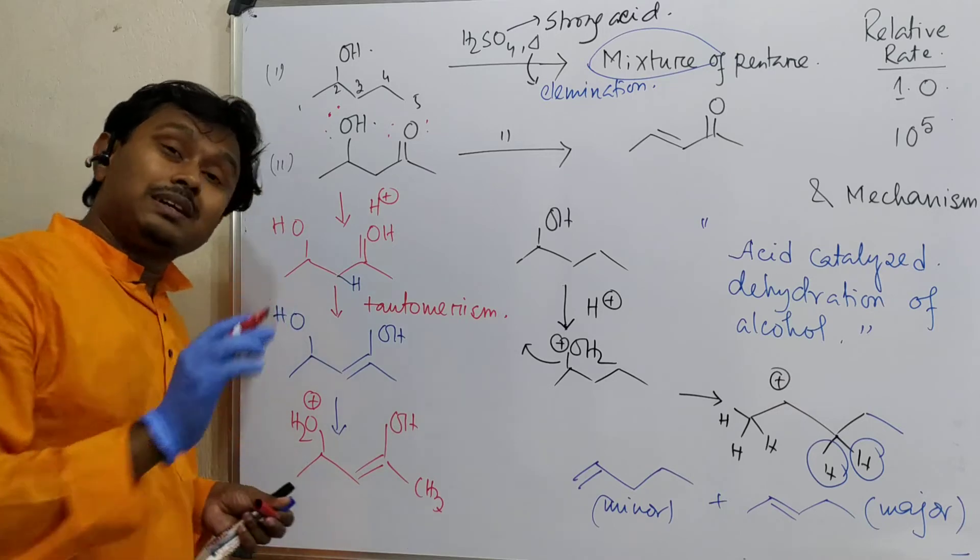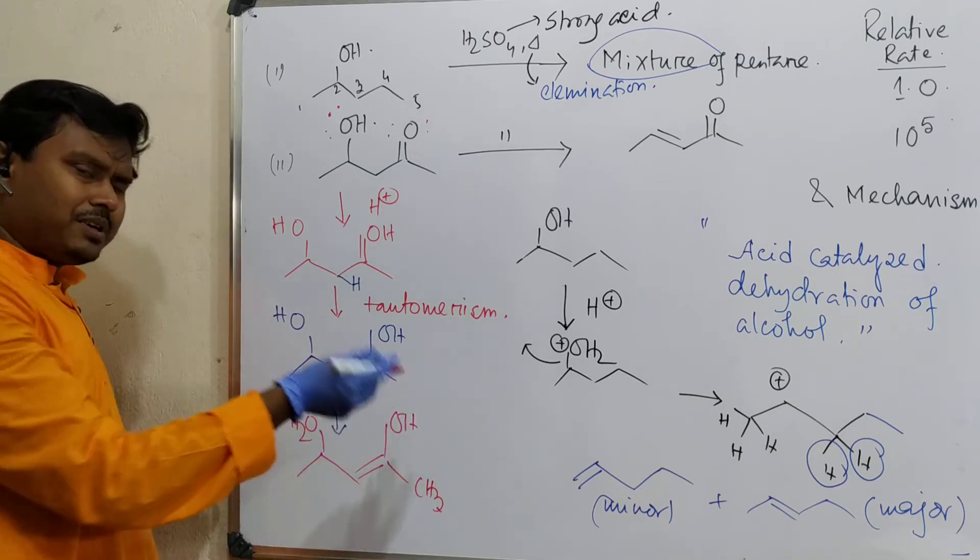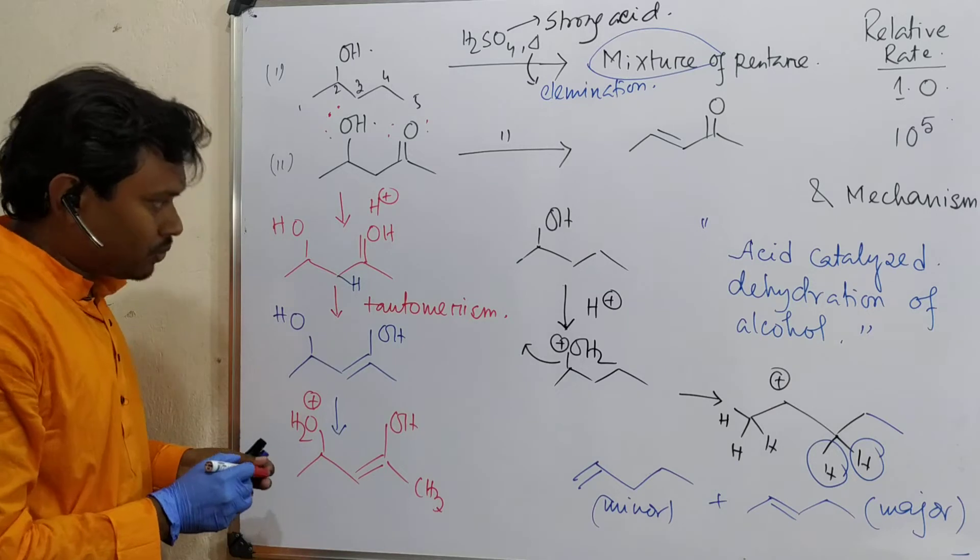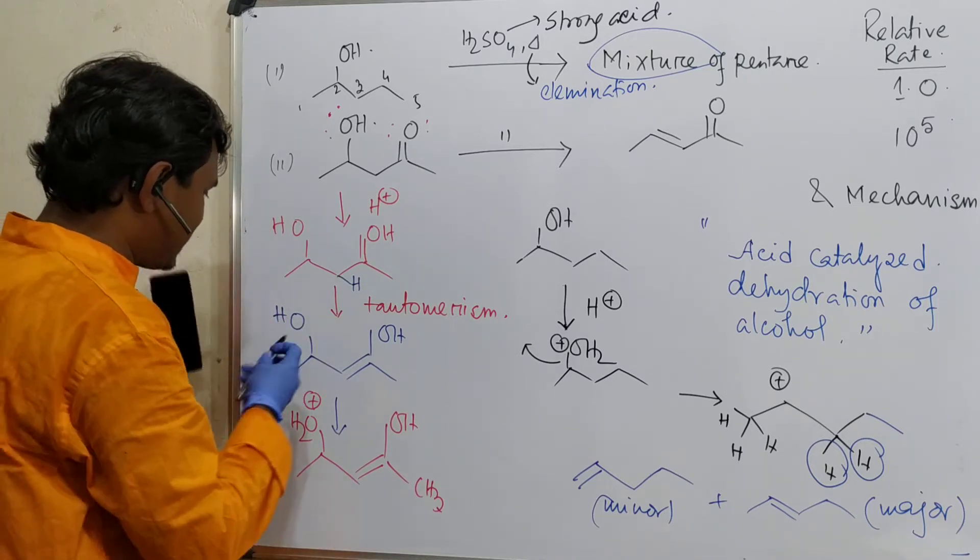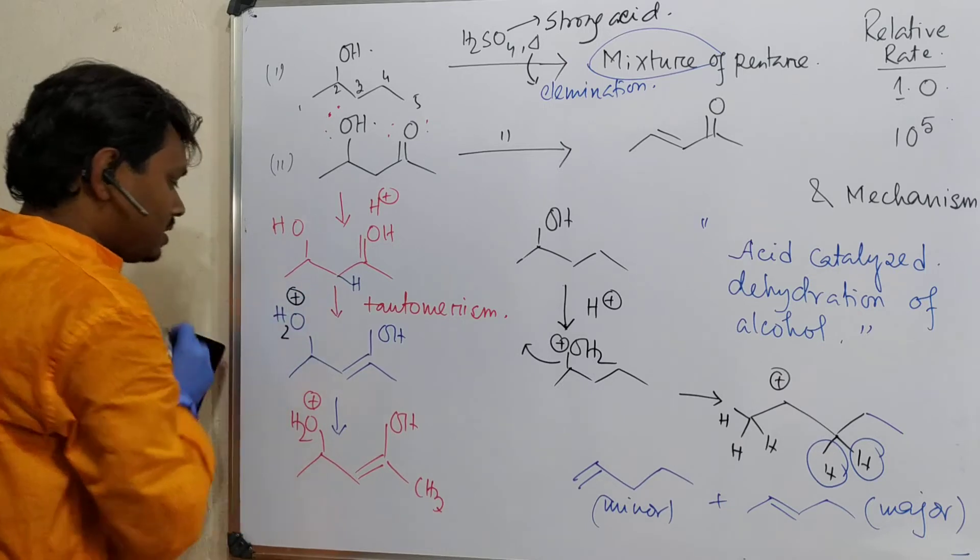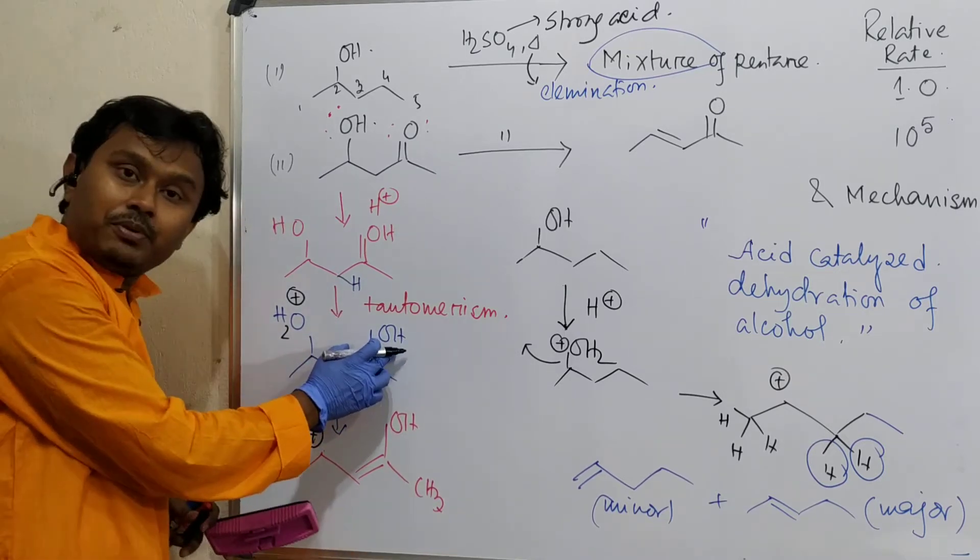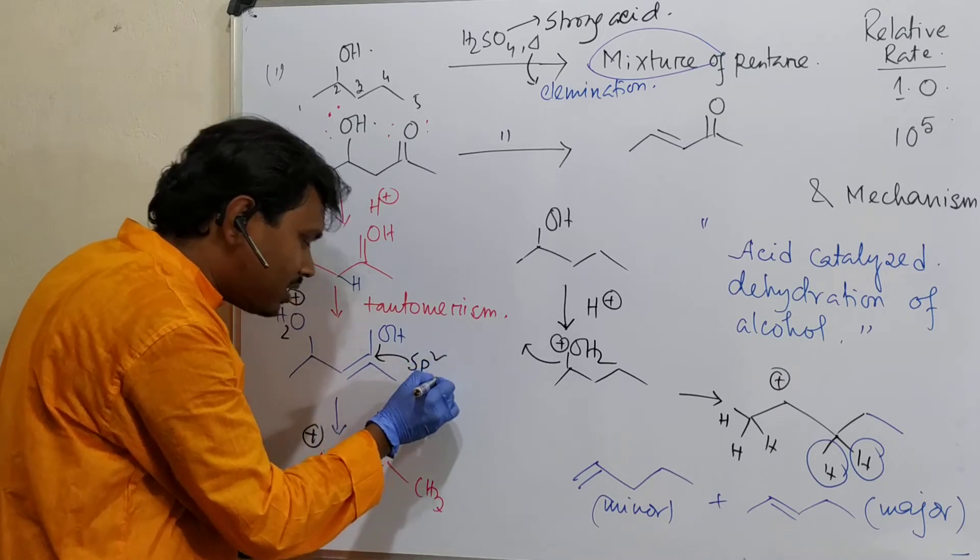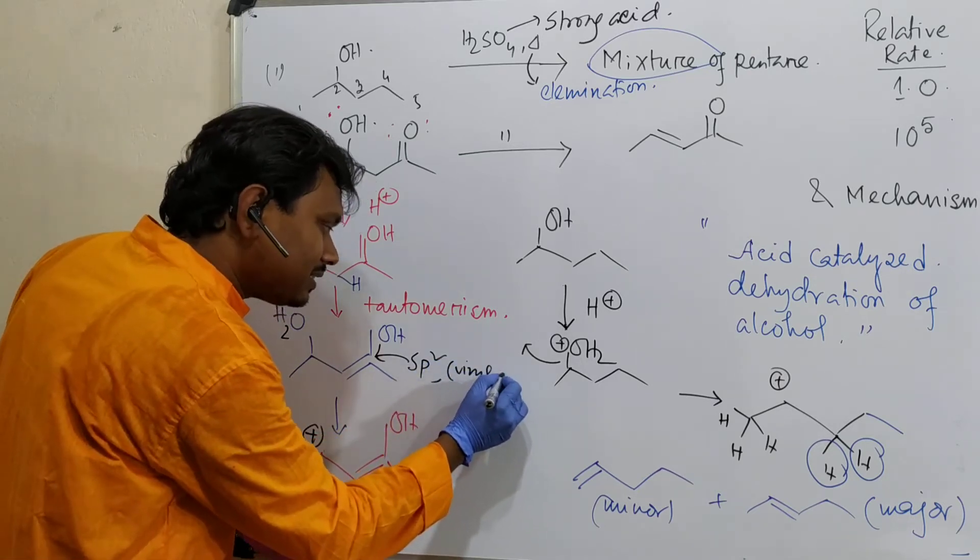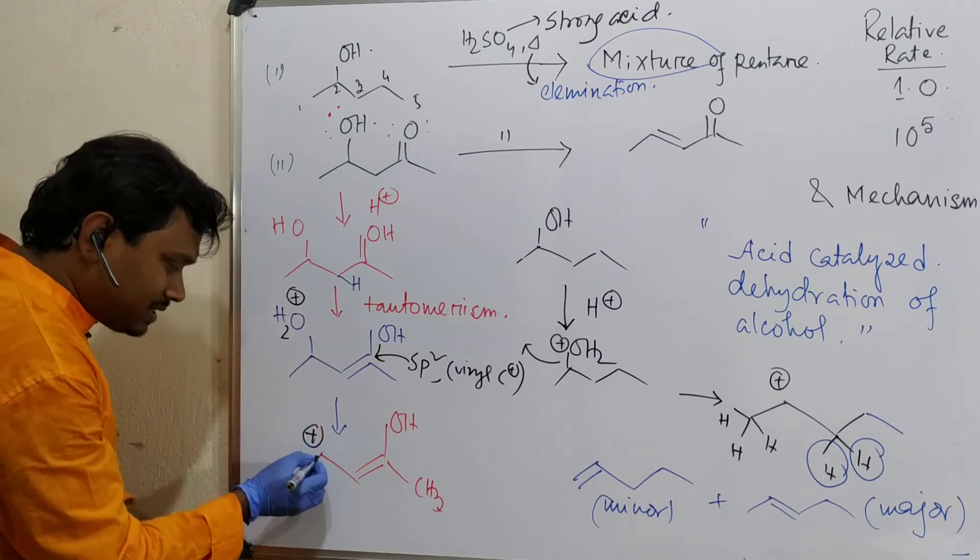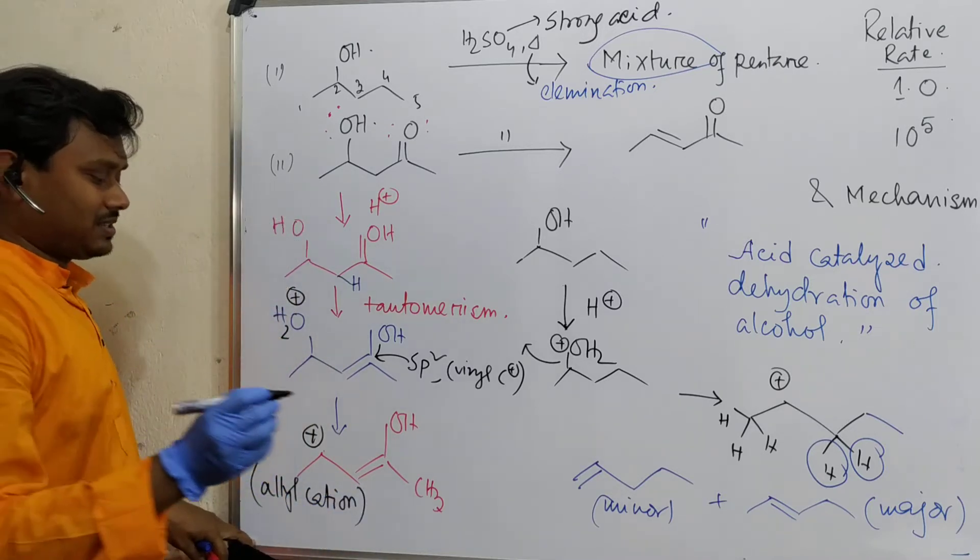Logically, protonation is possible from both. Second point: protonation is a reversible process. But we will consider that part which undergoes products. If we think from basic understanding clarity, if protonation happens here, then after elimination, what is the product? If this eliminates, what is the expected product? Carbocation. But if elimination happens from here, then this carbon is SP2 like enol. So actually this is a vinyl cation, which is very unstable. But this is allyl cation.